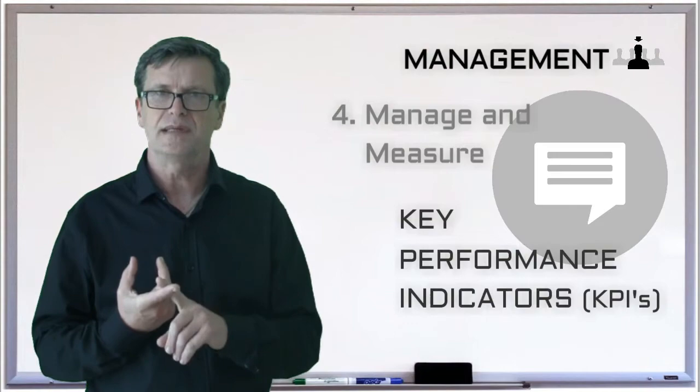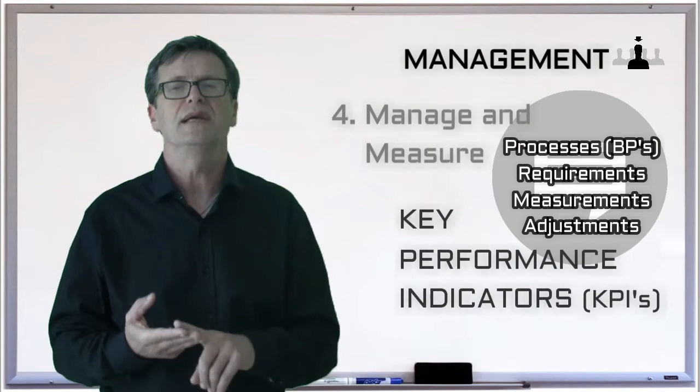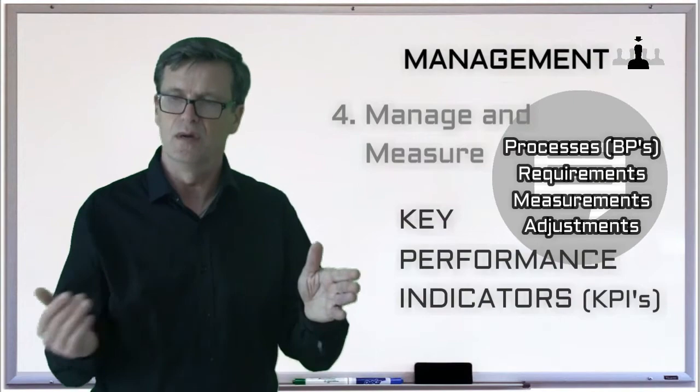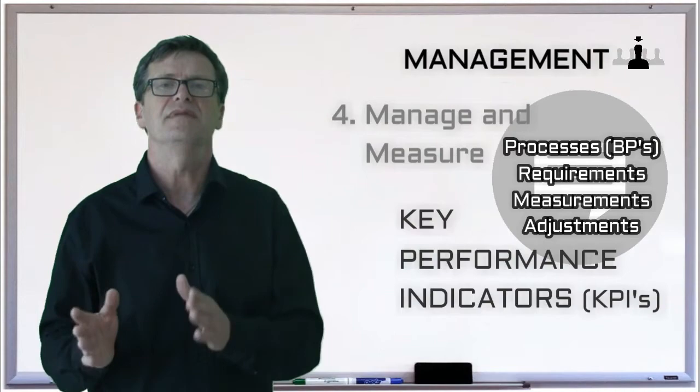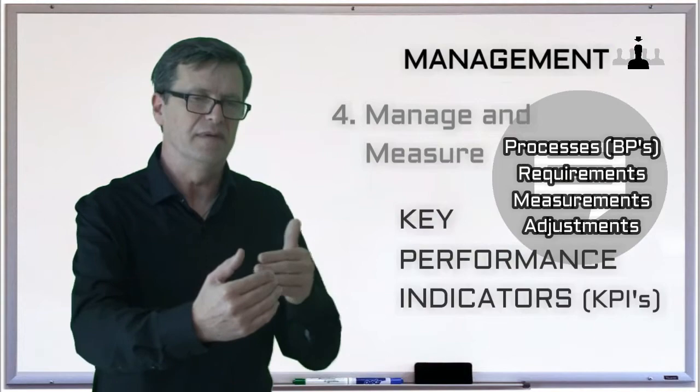Making that selection requires you to define the business processes or BPs as we say in business, which you're looking at. Define the requirements for those business processes. Establish quantitative and qualitative measurements of the desired results and the ways to compare those with the goals that you have set. And finally, decide how to manage the differences between the goals and achieved measures. Or in other words, how to adjust the processes in order to achieve the desired results.